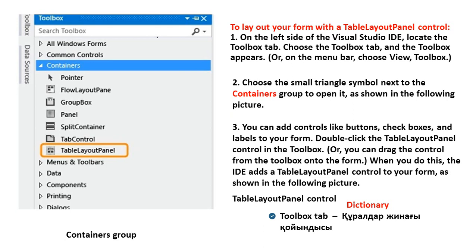To lay out your form with a table layout panel control: first, on the left side of the Visual Studio IDE, locate the Toolbox. Choose the Toolbox tab and the Toolbox appears, or on the menu bar choose View, Toolbox. Second step: choose the small triangle symbol next to the Containers group to open it. Third step: you can add controls like buttons, check boxes, and labels to your forms.